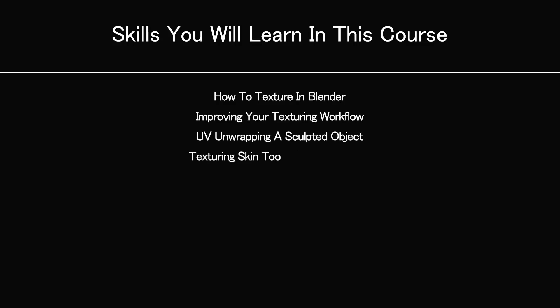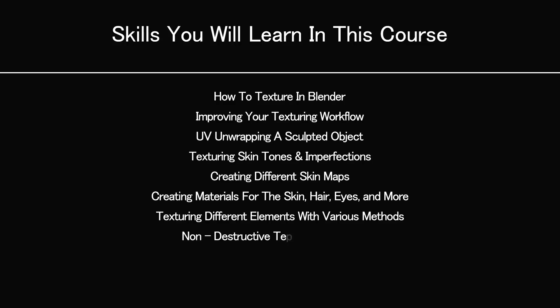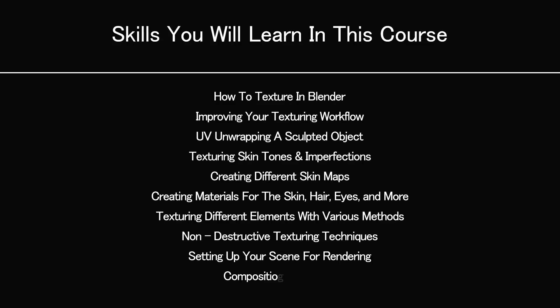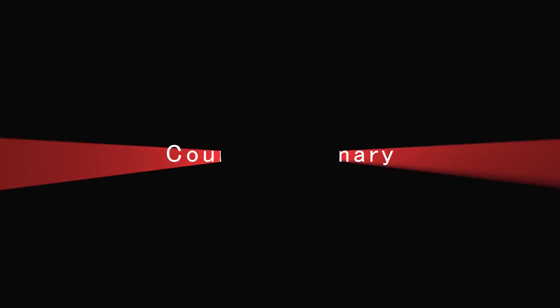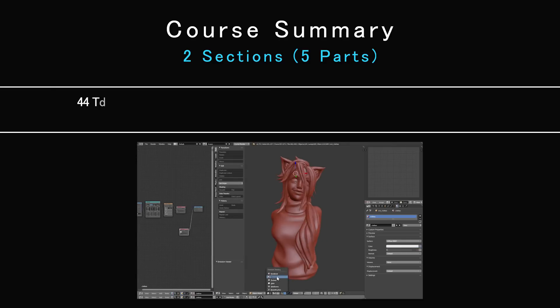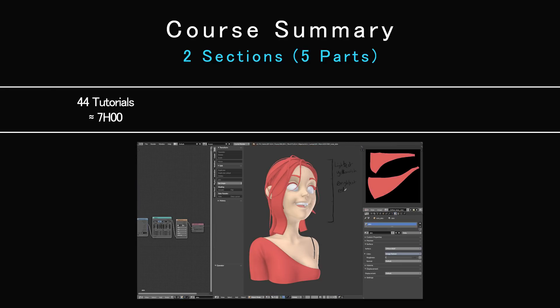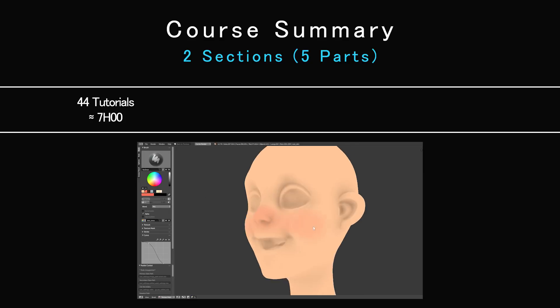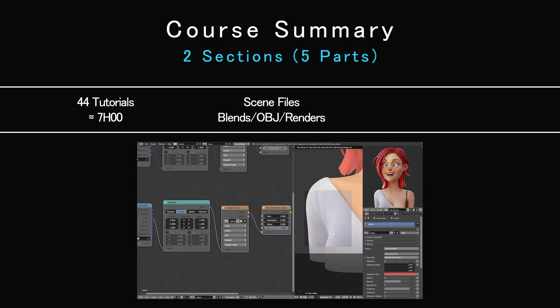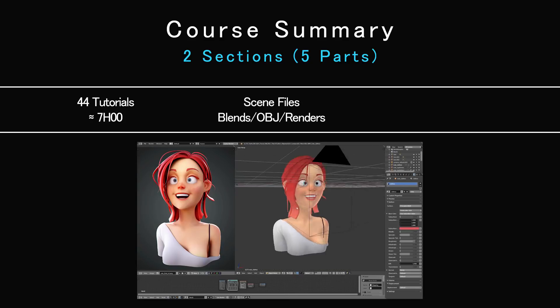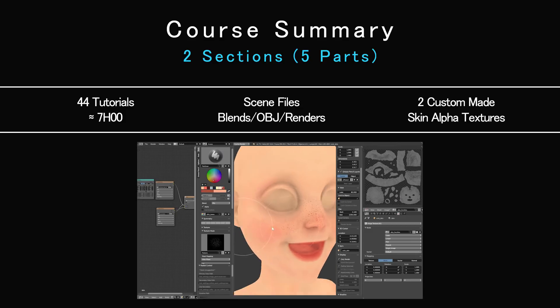This course will teach you the essentials of texturing in Blender, material creation, and advanced techniques to render complex subjects such as skin through step-by-step real-time tutorials. In short, this course contains around 7 hours of real-time step-by-step tutorials separated into two main sections with five different parts, including all of the scene files, two female characters — Vivi and Eevee — and two custom-made skin alpha textures.